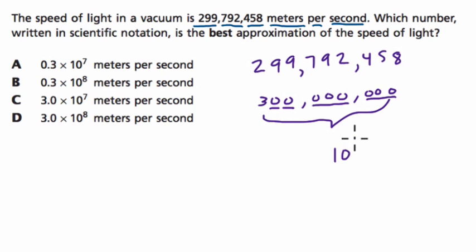And 10 to the eighth, right, would be 100 million. So here we have three of those 100 millions, you have 300 million. So it's three times 10 to the eighth. And if I didn't convince you that way, let me reverse the process.